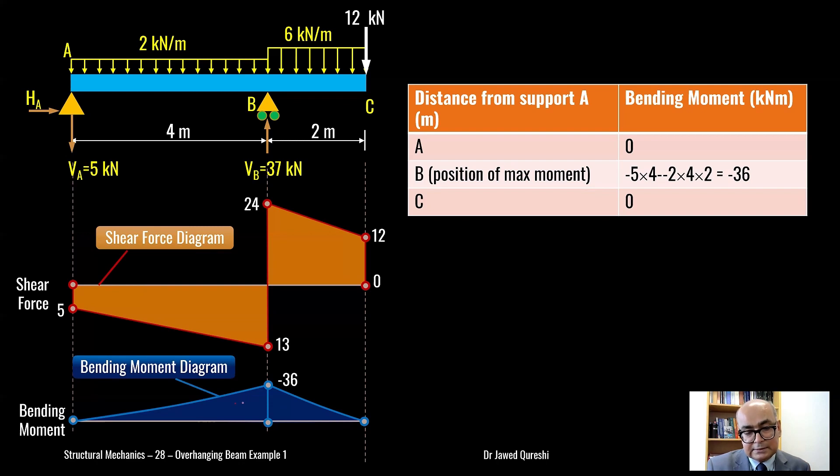Now bending moment here is negative. Negative means hogging moment. Hogging means it will be like this. It means it is tension at top and compression at the bottom. Normally for a simply supported beam, you will have compression at top and tension at bottom. But here we have hogging bending moment. In hogging bending moment, we have tension at top and compression at bottom. You have really very huge loading that is causing the structure to bend in upward direction. This two kilonewton per meter, it is not doing much to bring it down because the total load on the right side of roller support is huge. So six times two is 12 and plus 12 is 24. On the left side, you have two times four, which is eight.